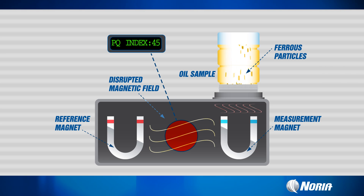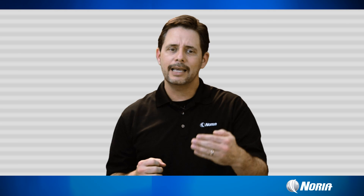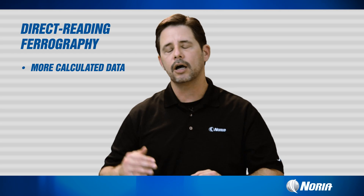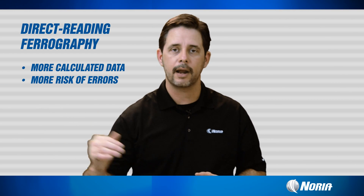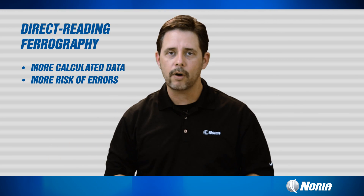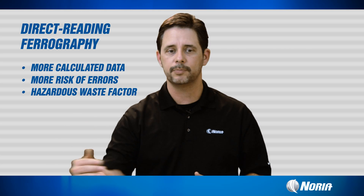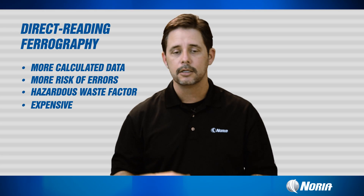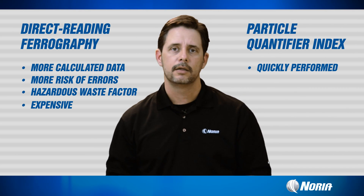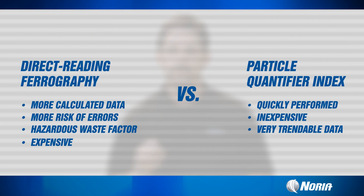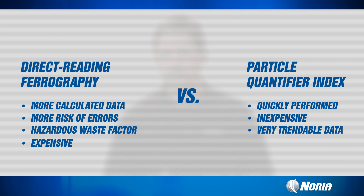The PQ index is a very trendable, easy number to work with. With DR ferrography we have more calculated data, but with that comes the potential for sample prep error, plus hazardous waste disposal requirements, making DR ferrography a much more expensive test. The PQ index, on the other hand, is very quick, very inexpensive, highly trendable, repeatable, and reproducible, with virtually zero sample prep and very little potential for technician error.